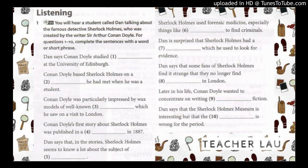Conan Doyle wrote his first set of stories about Holmes over a ten-year period. After this, he became more interested in writing historical novels rather than detective fiction, and so he killed off Sherlock Holmes in a book published in 1893. But in 1901, Conan Doyle gave in to public pressure and wrote some more books about Holmes.